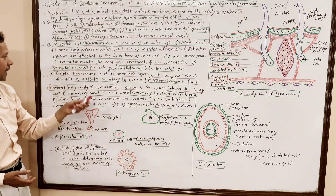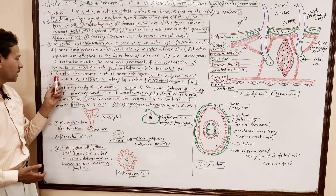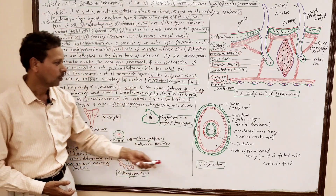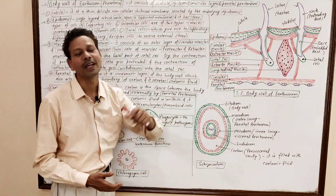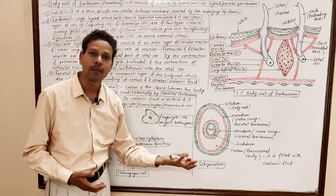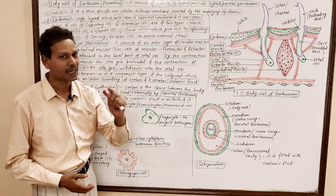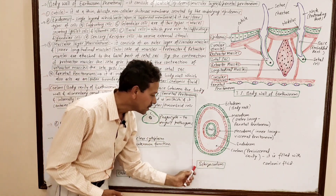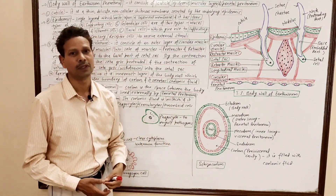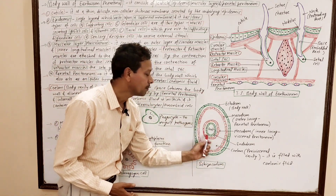The next important topic in today's lecture is coelom — the body cavity of earthworm. In earthworm, as in annelids, a true coelom is present. This coelom is a schizocoele, meaning it is derived from mesoderm. It develops due to splitting of the mesoderm during embryonic stages.